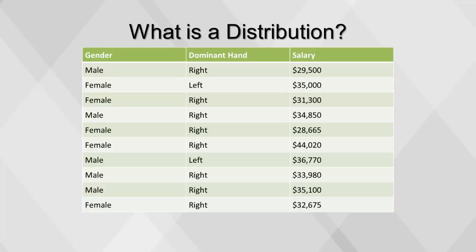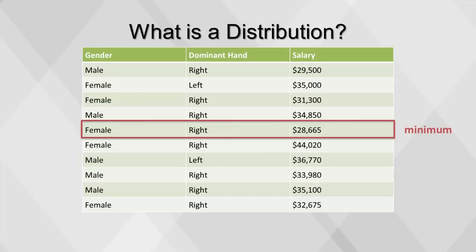We'll explore the most popular methods using this dataset of 10 rows of bank teller salary data. Because the sample dataset is so small, we can make some quick observations about the salary variable. The lowest salary is $28,665, referred to as the minimum value. The highest salary is $44,020, the maximum value. Finally, many of the salaries are in the low $30,000 range.